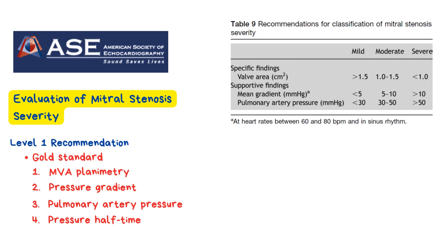These tools not only confirm the diagnosis but help classify the stenosis as mild, moderate, or severe. For example, a mitral valve area greater than 1.5 square centimeters is usually mild. Around 1 to 1.5 is moderate, and less than 1 is considered severe.